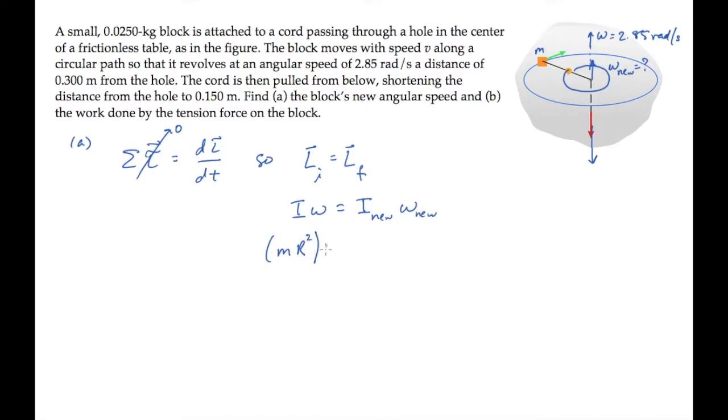The moment of inertia of a point particle, a distance r from the origin, is mr squared, so we substitute that on both sides of the equation and solve for the new angular speed omega nu.